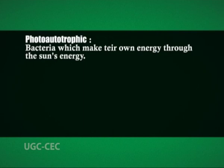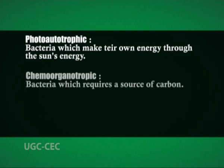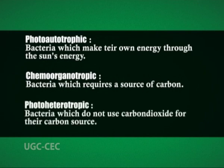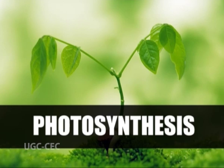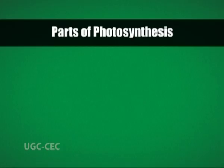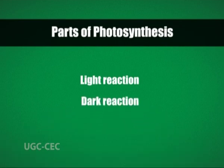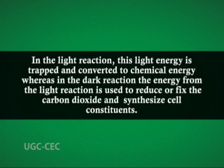These bacteria can be photo-autotrophic — making their own energy through the sun's energy — or chemo-organotrophic, requiring an organic source of carbon, or photo-heterotrophic, meaning they don't use carbon dioxide as their carbon source. Photosynthesis is divided into two parts: the light reaction, where light energy is trapped and converted to chemical energy, and the dark reaction, where the energy from the light reaction is used to reduce or fix carbon dioxide and synthesize cell constituents.